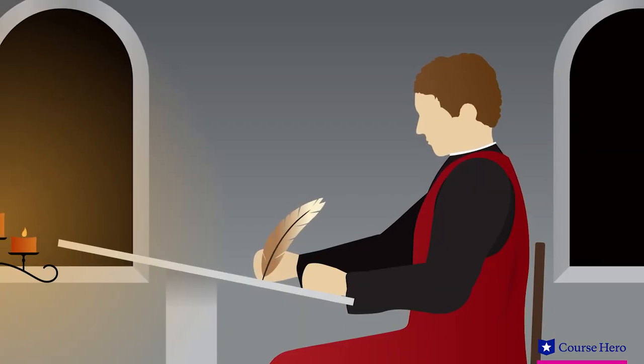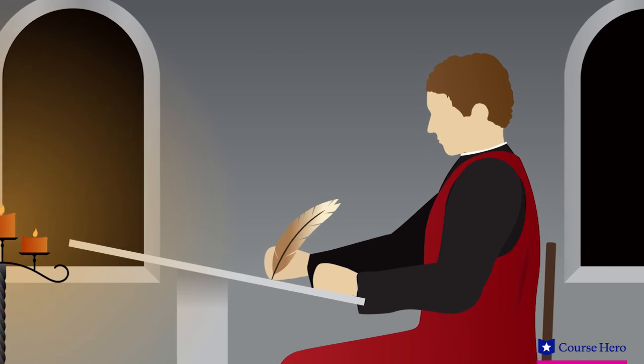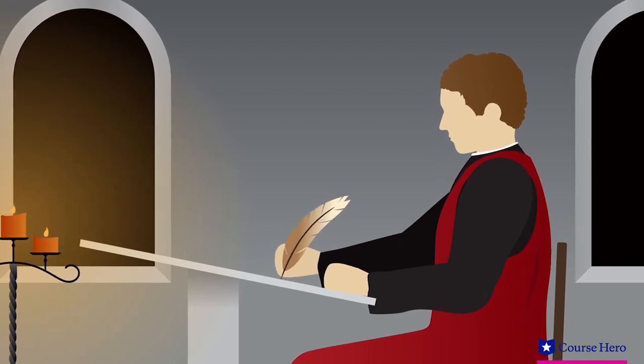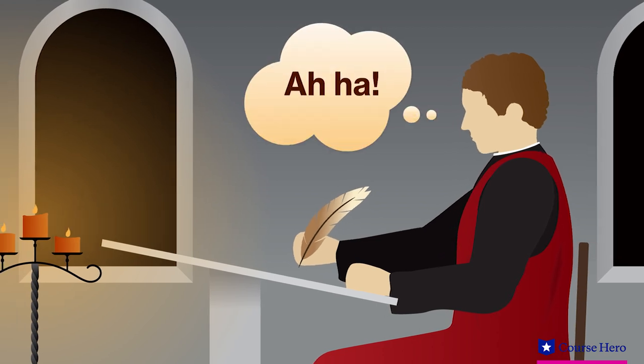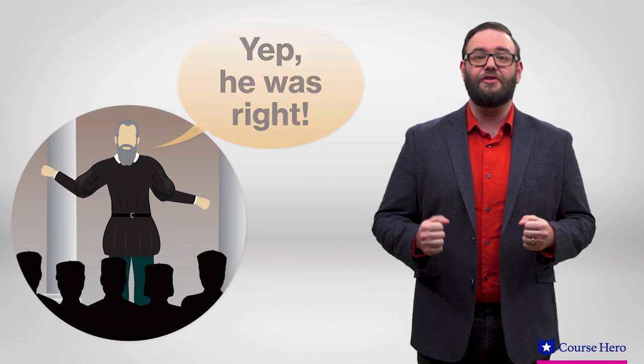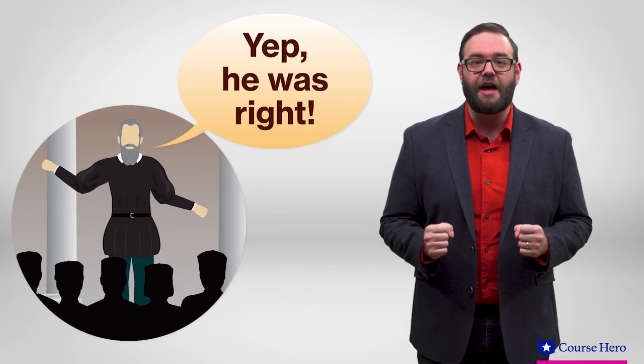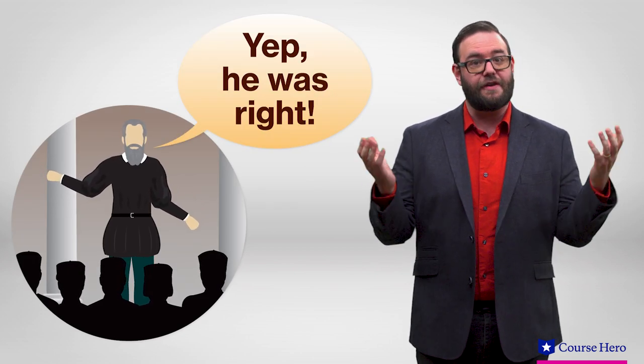Dante's description of hell inspired mathematician Antonio Manetti to draw a detailed map of hell. He calculated the first circle of hell, Limbo, to measure a precise 87.5 miles across. The astronomer Galileo even entered the debate when he confirmed Manetti's calculations during a series of lectures in 1588.